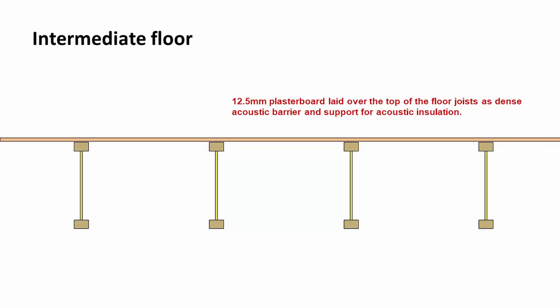On top of the joist, to act as an acoustic barrier, we would put a layer of plasterboard. It seems quite strange, but plasterboard is a nice dense material, and it's fireproof as well. A 12.5mm plasterboard is laid over the top of the joists, and it also allows us to support the insulation which we're going to put on top later on.